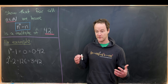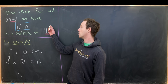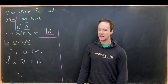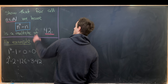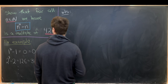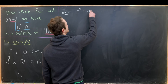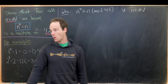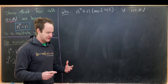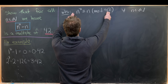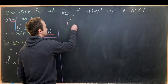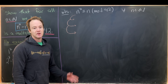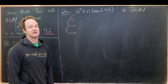Now that we've reviewed all the necessary results, let's revisit our goal: to show that n to the 7 minus n is always a multiple of 42. Rewriting this in the language of congruence, we want to show that n to the 7 is congruent to n modulo 42 for all natural numbers n. This splits into three statements depending on the prime factors of 42. Notice that the prime factors of 42 are 2, 3, and 7 — in fact, 2 times 3 times 7 is 42.